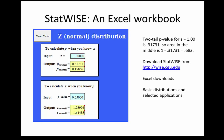On the WISE site, you can find an Excel workbook called StatWISE, which has many basic distributions, including the z-distribution. You can enter either the z-value or p-value, and entering the z-value will give you the associated p-value. For a two-tailed test, the p is 0.317, so the area inside between the tails is 1 minus that, or 0.683, as we saw before.